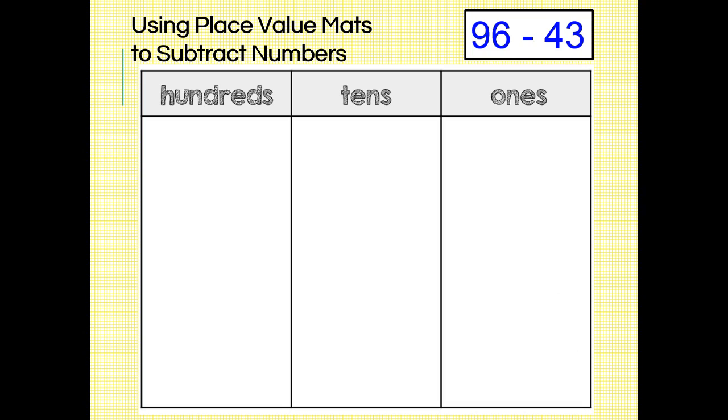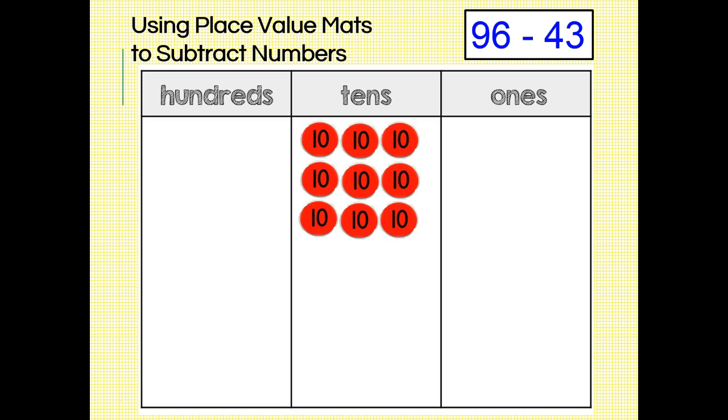The first problem is 96 minus 43. Subtraction is different than addition on the place value mat because we just lay down place value disks for the minuend, the number we are subtracting from. In this case, our minuend is 96, so we will put down nine tens disks and six ones disks.